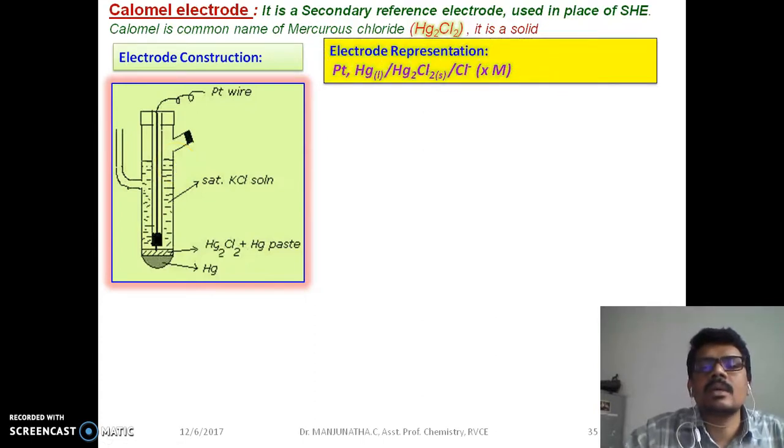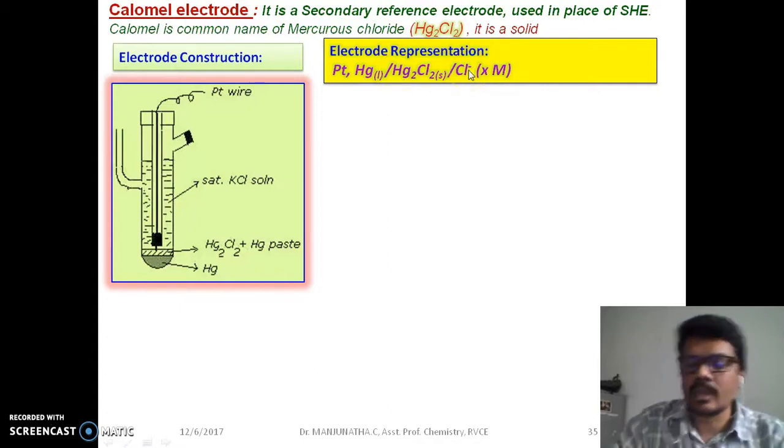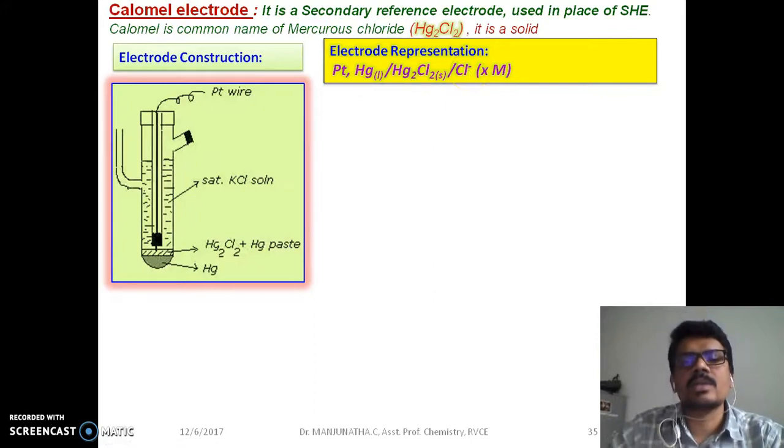This is represented as platinum, it's an electrical contact, and that is in contact with mercury liquid and that is in contact with mercury chloride and Cl- that is potassium chloride for some concentration. Generally we take saturated KCl.